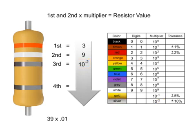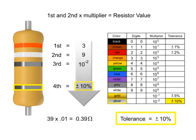In this instance, we would take the 39 and move the decimal point two places to the left, resulting in a value of 0.39 ohms. Thus, the value of this resistor is 0.39 ohms with a tolerance of plus or minus 10%.